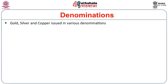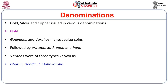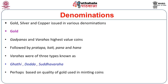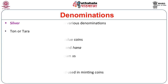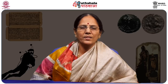Coins were issued in various denominations. In inscriptions, gold coins are named Gadyanas and Varahas, which are the highest value coins, followed by Pratapa, Kati, Pana, and Hana. Varahas were of three types: Gatti Varaha (strong), Dodda Varaha (big), and Suddha Varaha (pure), likely based on the quality of gold used. Silver coins are known as Stana or Tara, and copper coins are known as Pana, Jital, and Kasu. These references come from Vijayanagara period inscriptions.